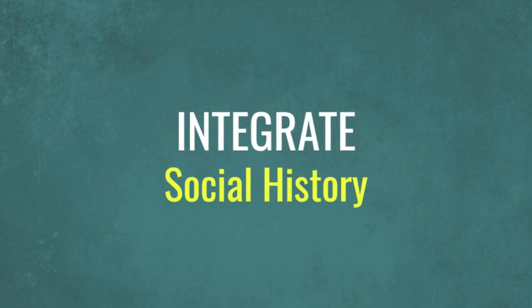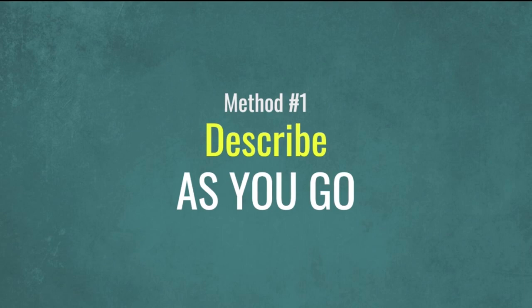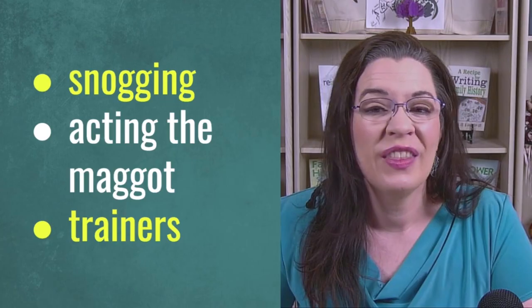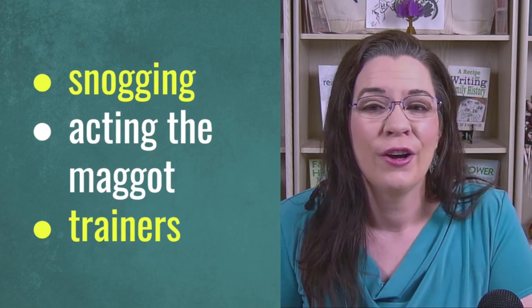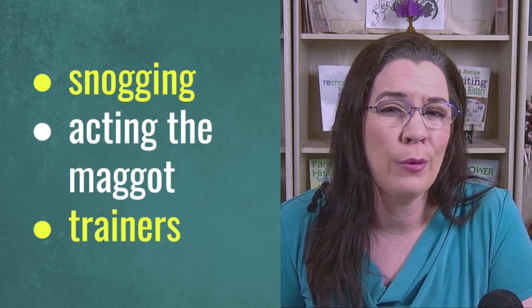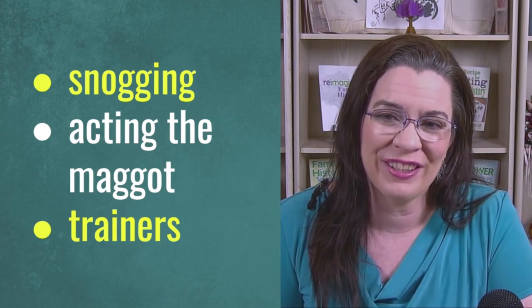Two techniques will help you include social history into your ancestor's story. The first technique is called 'describe as you go.' This technique does what the name suggests, defining anything that may seem unfamiliar to your readers as you tell a story. This includes terminology such as slang, idioms, and the words that describe objects that a reader doesn't use or has not experienced. For instance, there are words from England and Ireland that few Americans use. Since I attended Texas A&M University, one of my favorite annual traditions is Aggie Muster. To folks who've never heard of it, I need to explain the experience. Sometimes places need explaining because those places no longer exist, like Astroworld in Houston.